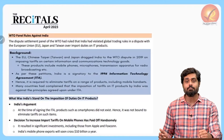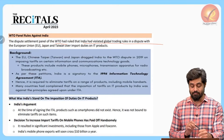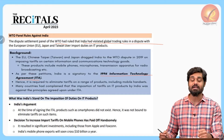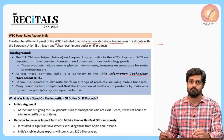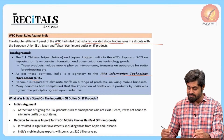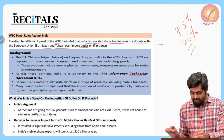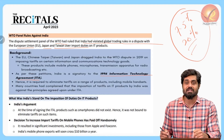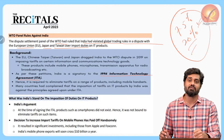The dispute settlement panel of WTO ruled that India has violated global trading rules with reference to the Information Technology Agreement. This agreement covers certain kinds of goods such as mobile handsets and electronic components. India had imposed duties to the tune of 7.5% to 20%, and countries such as the European Union, Japan, and Taiwan challenged this under WTO. The panel ruled in favor of the EU, saying these duties are a violation of the agreement.